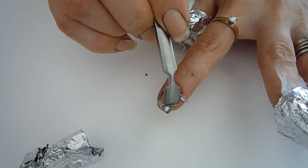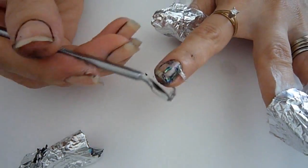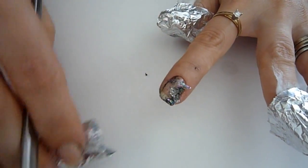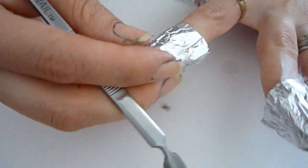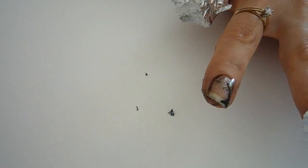Then we're going to take this little tool and just gently push that right off. As you can see it comes off really easy. If it's stubborn and it won't come off, you might need to stick your finger back into the foil for another three minutes or so and then remove it.